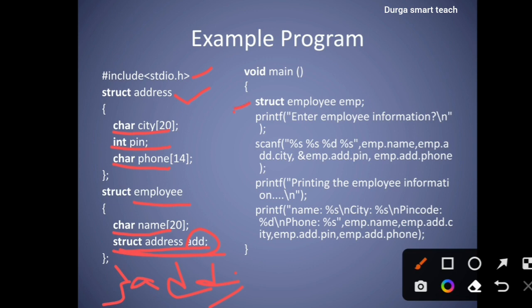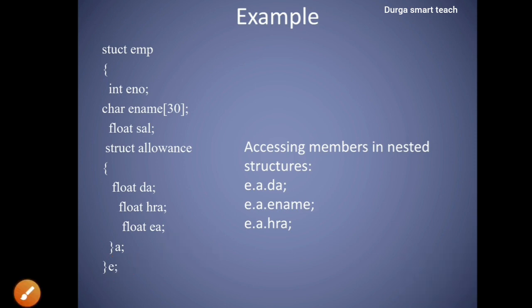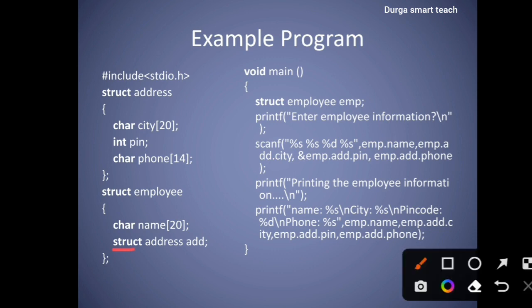Here, 'struct employee emp' — where employee is the structure name. We are declaring variable 'a' using the syntax: struct structure_name then variable_name. You can declare using that method or this method. Next, printf to display 'enter employee information'. Printf is used to display information as-is.